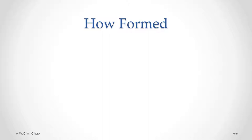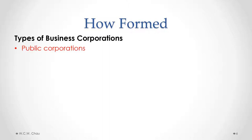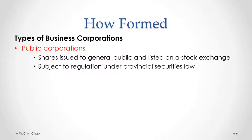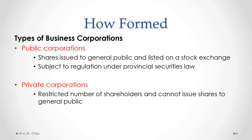There are generally two types of business corporations: public corporations and private corporations. Public corporations issue their shares to the general public and those shares are listed on a public stock exchange like the Toronto Stock Exchange, meaning any member of the general public with a brokerage account can buy and sell those shares. Because the shares are available to the general public, public corporations are subject to an extra layer of government regulation under provincial securities law. Private corporations are corporations whose shares are not listed on a public stock exchange; the number of shareholders is usually much smaller, and a private corporation generally cannot issue shares to the general public.